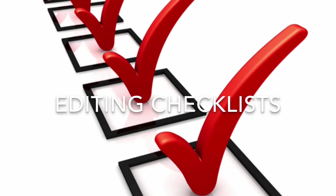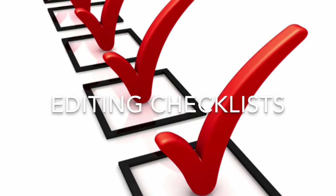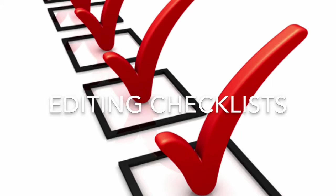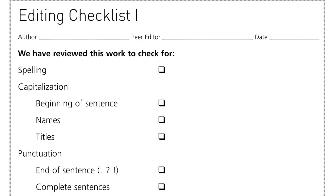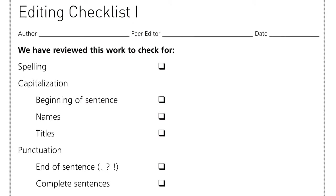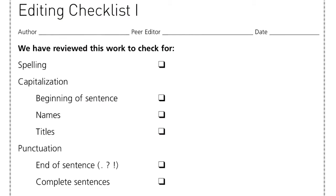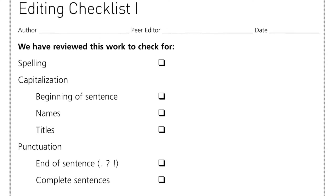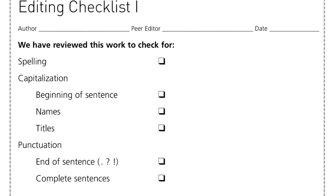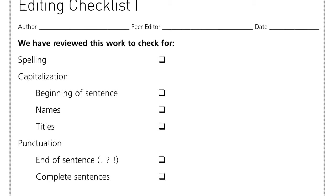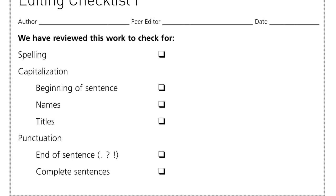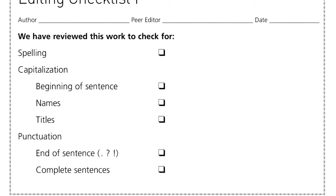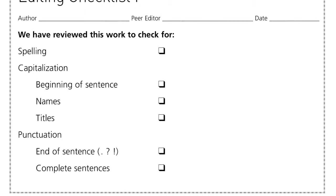This is an introductory video to editing checklists. These checklists can be found in the student book. The first one is editing checklist number one, and this can be used by the student and the parent to be checking for spelling, capitalisation, and punctuation.